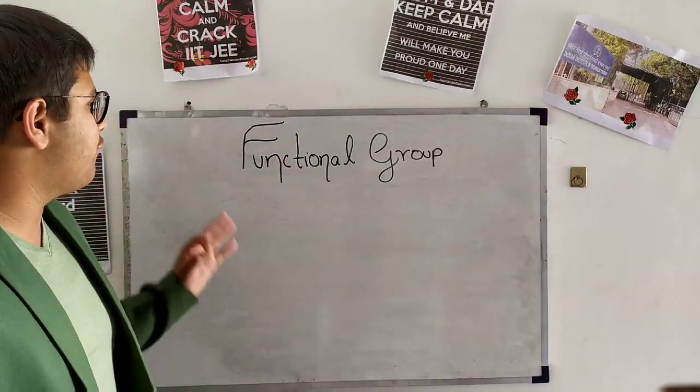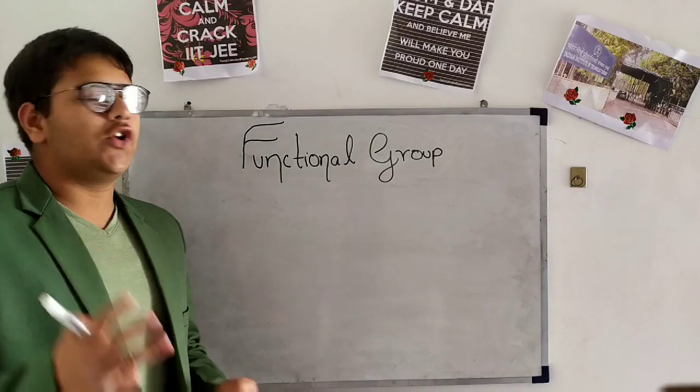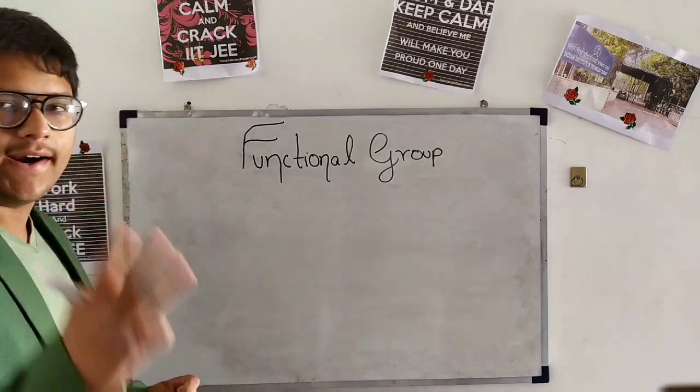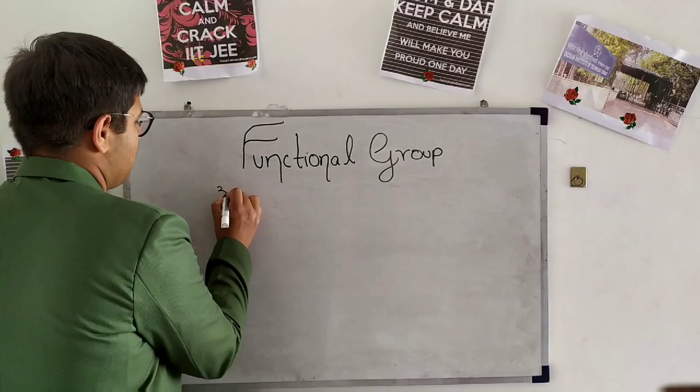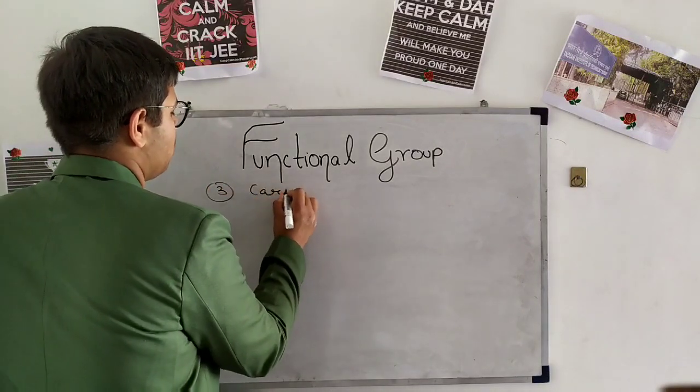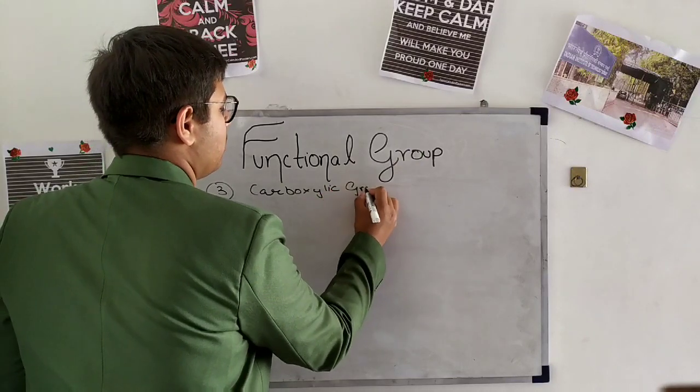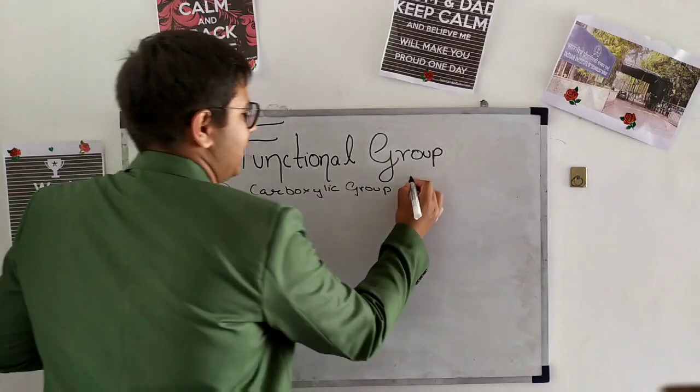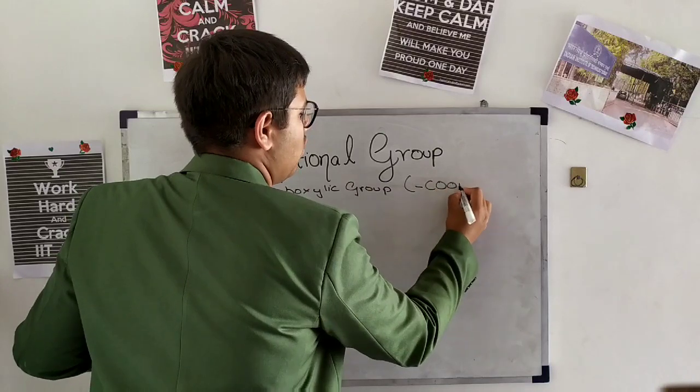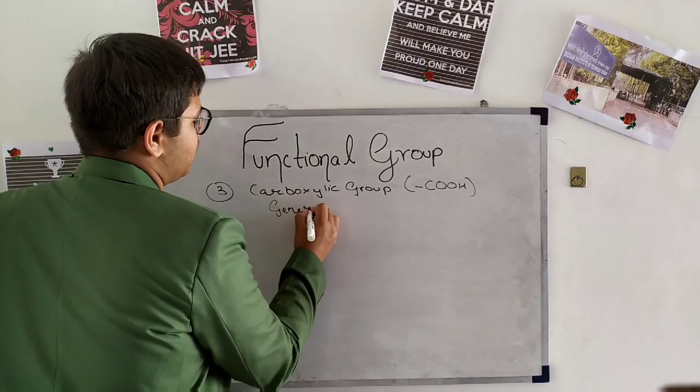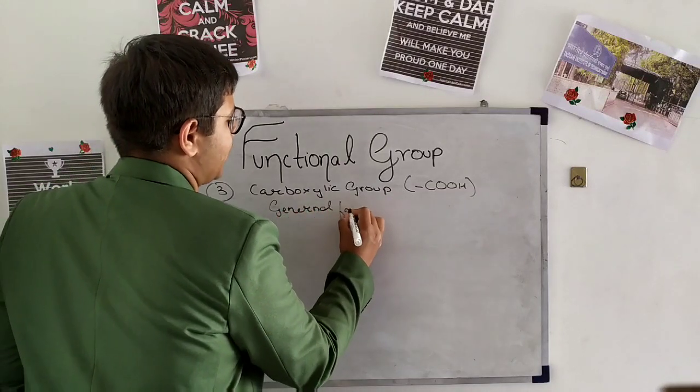I am going to study about the functional group. This is the third video of this lecture and in today's video we will study about the third functional group, that is carboxylic group, and its symbol will be COOH and the general formula is CnH2nO2.